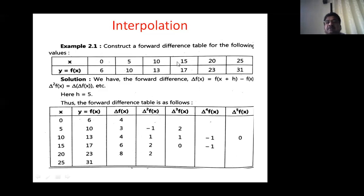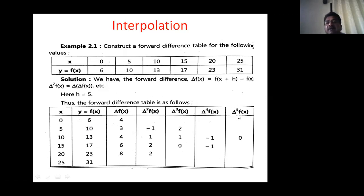The x values are given in the first row and the y values in the second row. We have to construct a forward difference table with x values in the first column, y or f(x) in the second column, and then the first difference, second difference, third difference, fourth difference, and fifth difference columns. Six values are given, so the table goes up to delta raised to five.